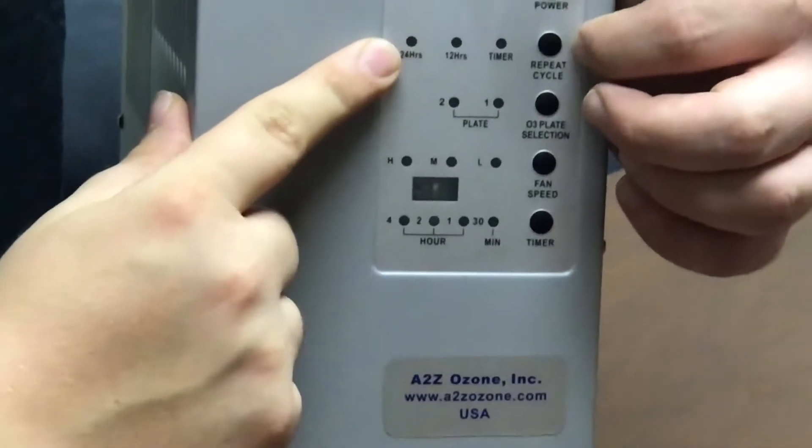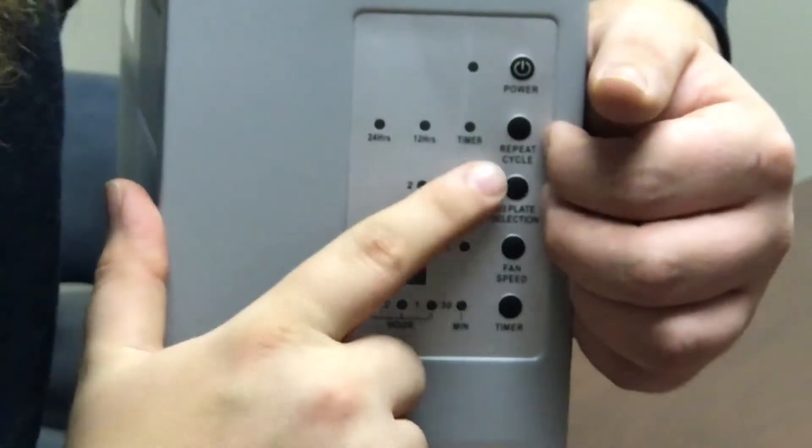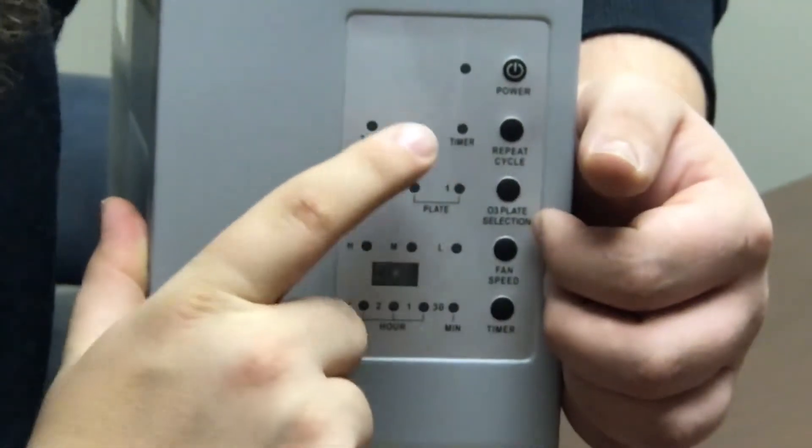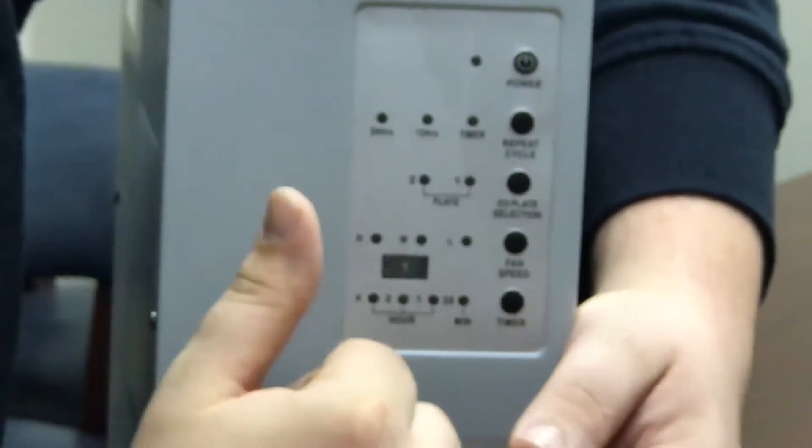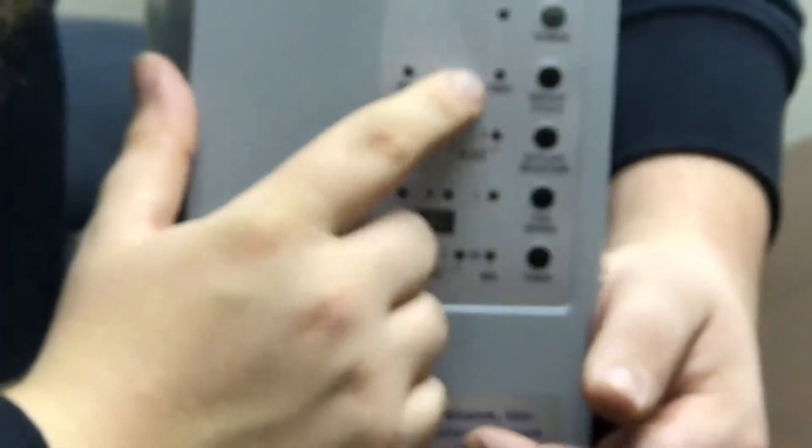The timer is actually a one-hour setting, and then you have 12 hours and 24 hours. Let's say you hit the four-hour setting with a one-hour repeat.